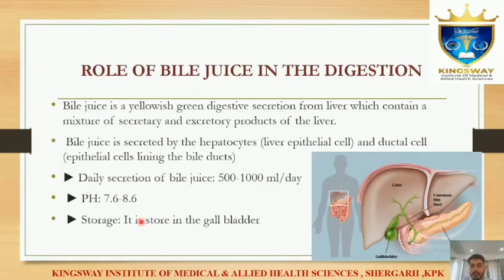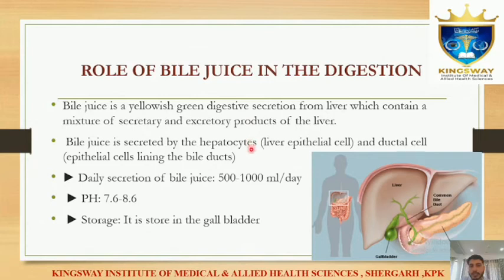The role of bile juice in digestion: bile juice is stored in the gall bladder, which is associated with the liver. Its color is yellowish-green and it is secreted by the liver. It is both a secretory and excretory product of the liver, secreted by hepatocytes and ductal cells. It is secreted at 500–1000 ml per day, with a pH of 7.6 to 8.6, and is stored in the gall bladder.